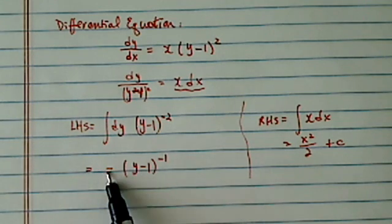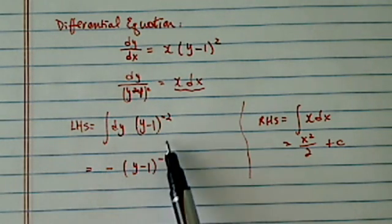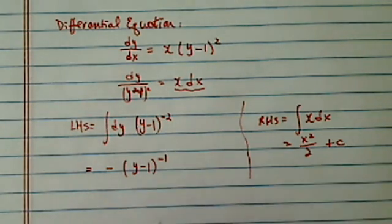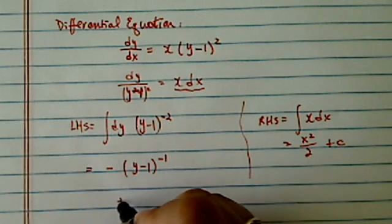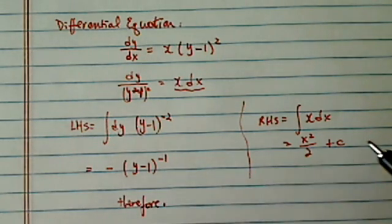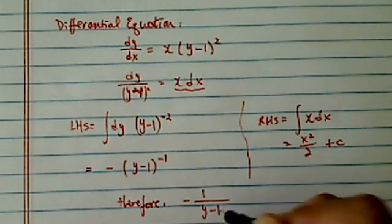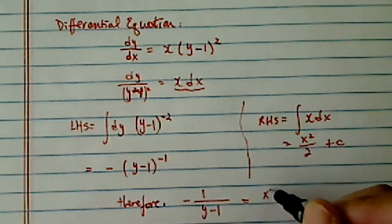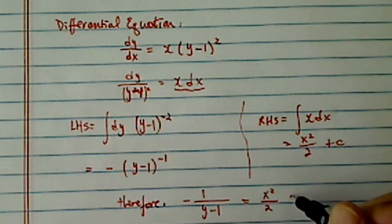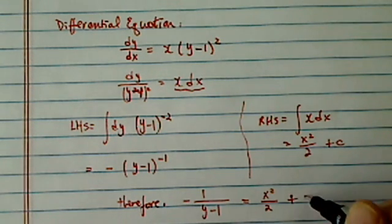we'll have this minus minus cancel out, and then we'll have a minus 2. So let's put them together. So therefore,